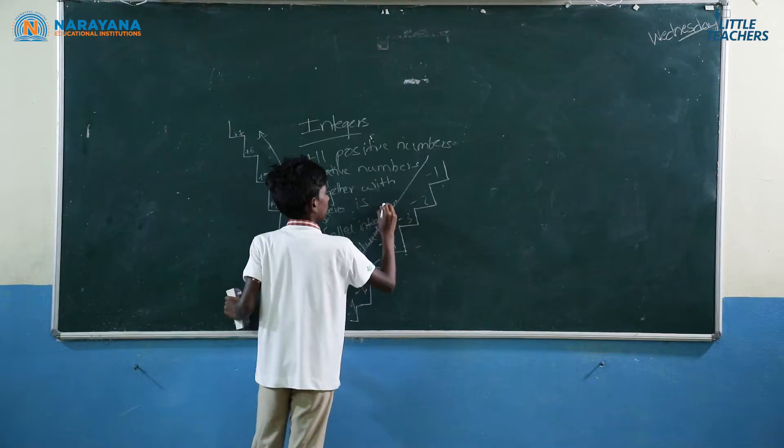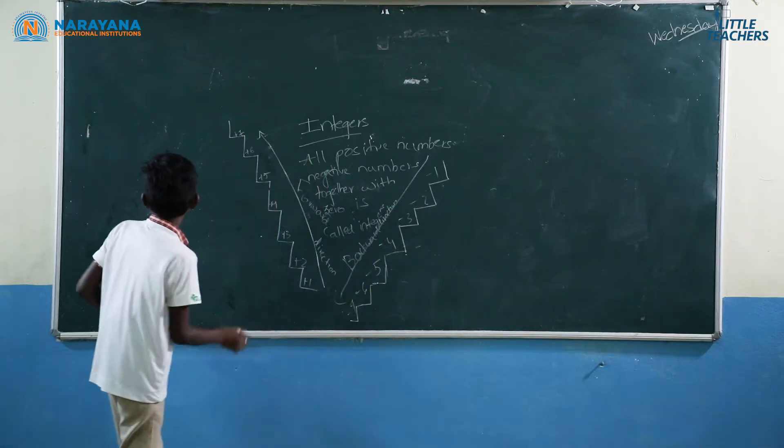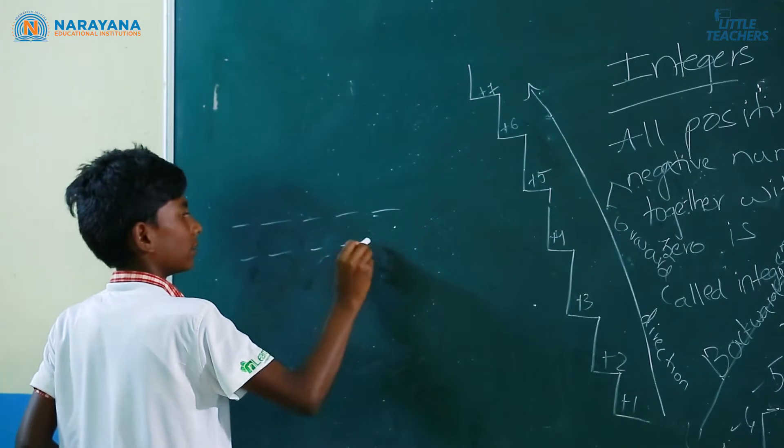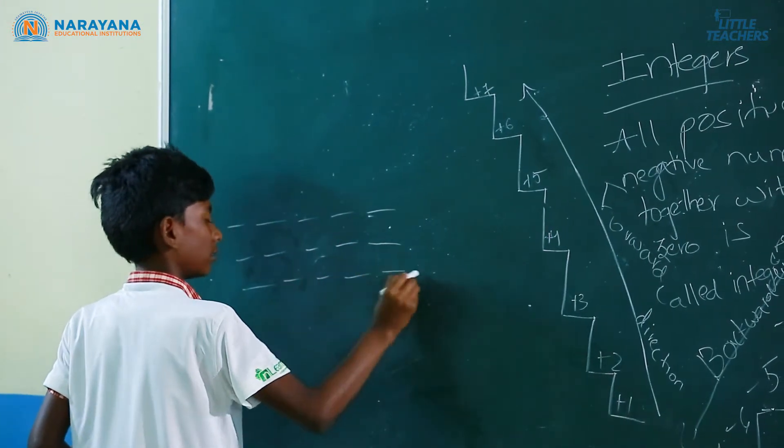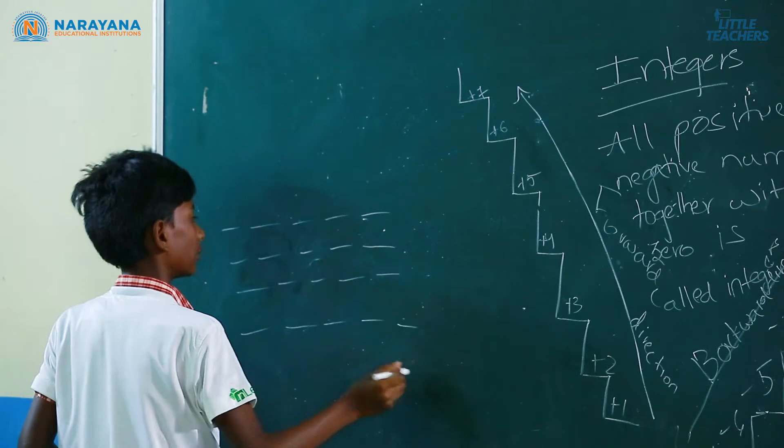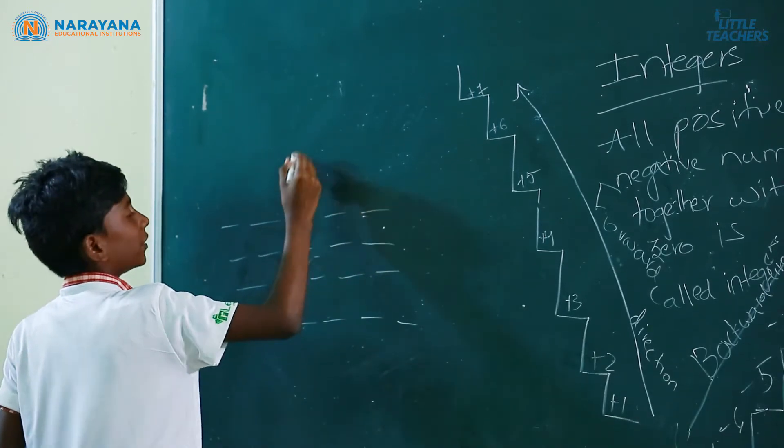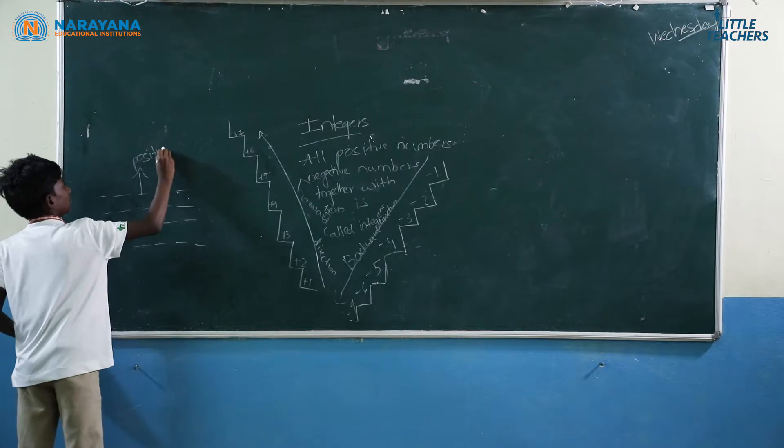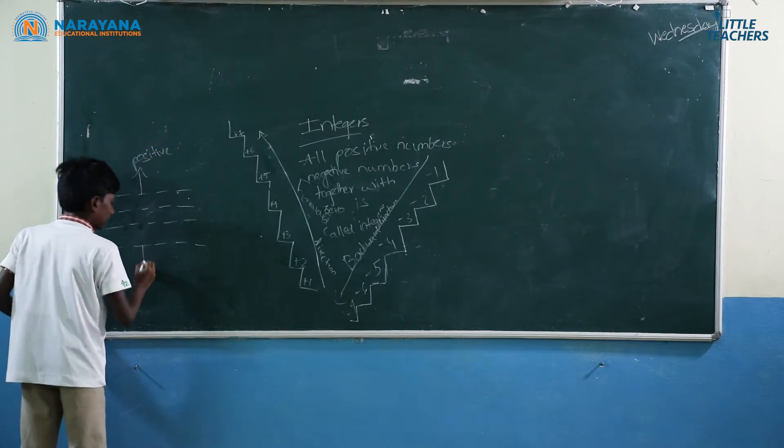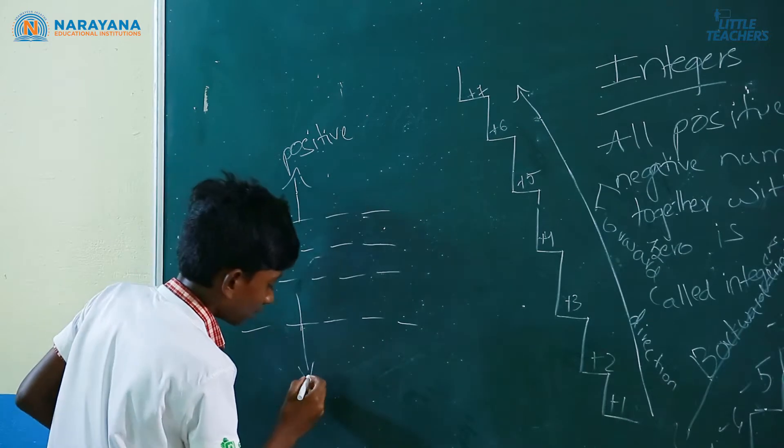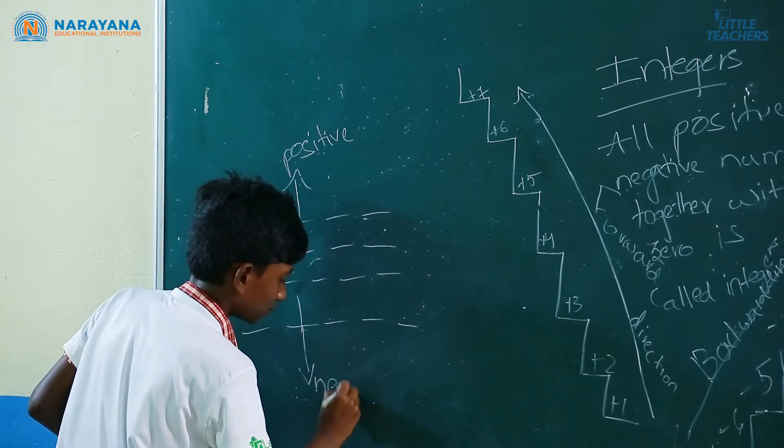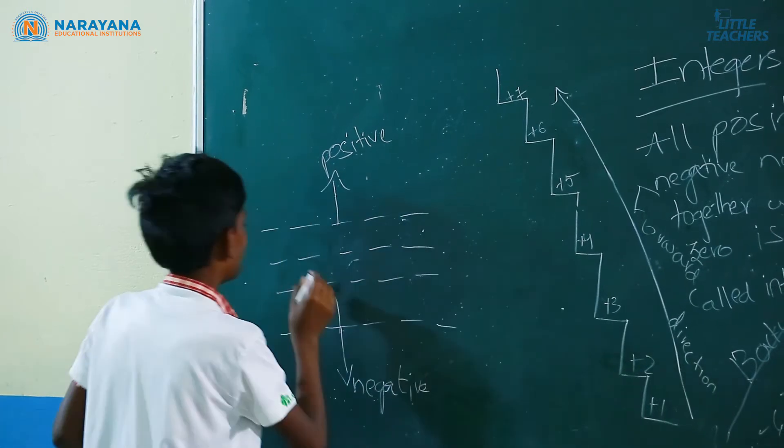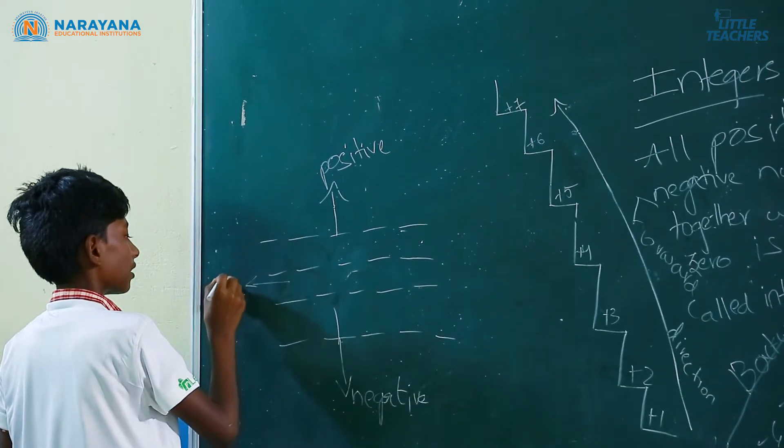Let's take an example of a sea level. At the top of the sea level, we consider it as positive. At the depth of the sea level, we consider it as negative. The middle part of the sea level is 0.